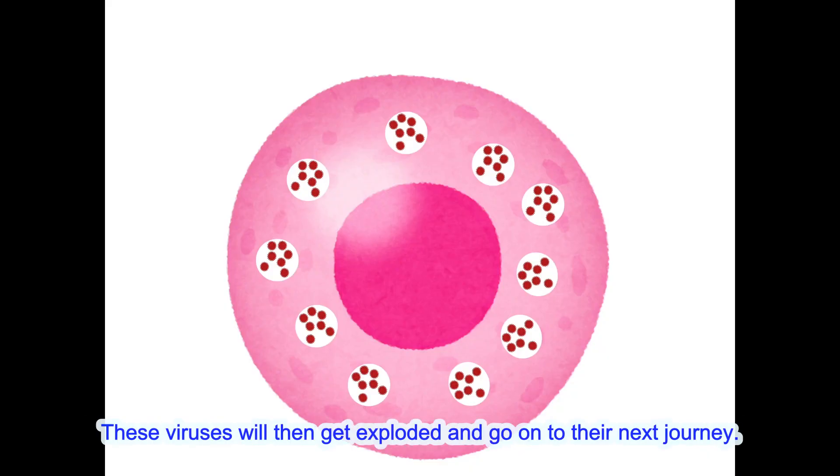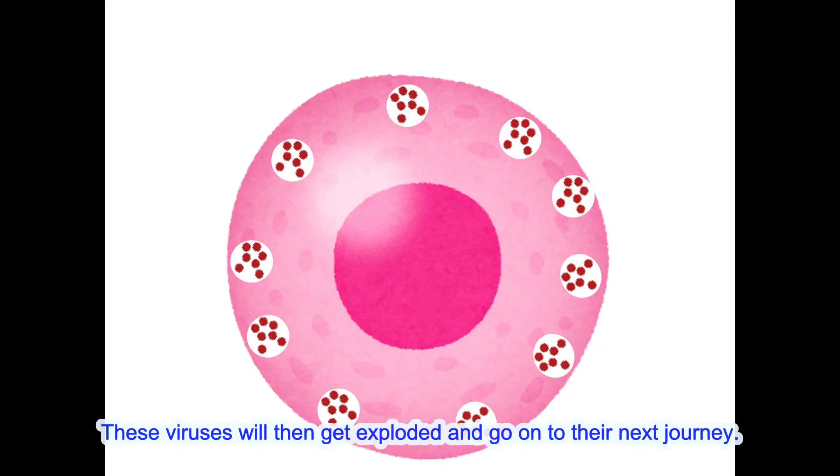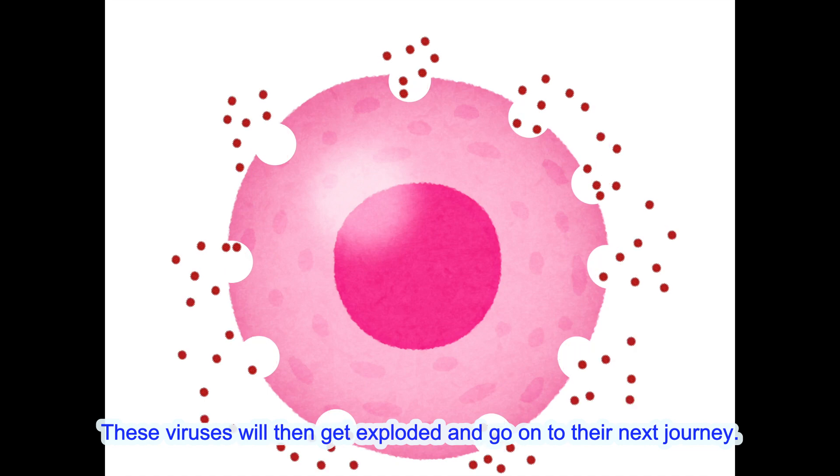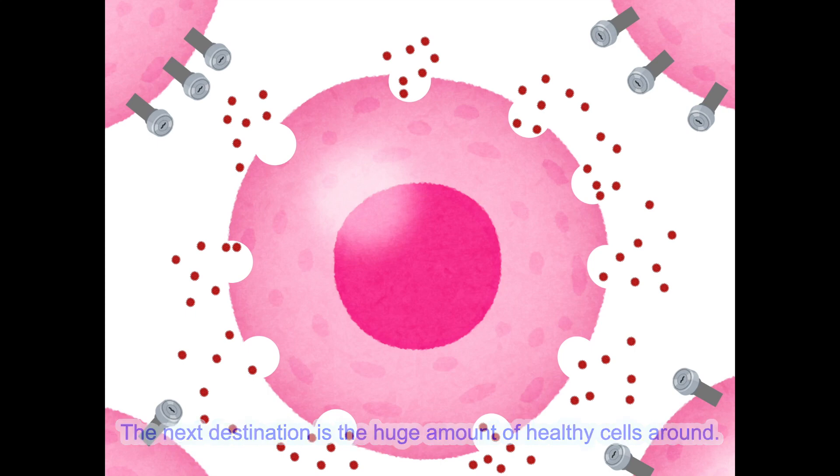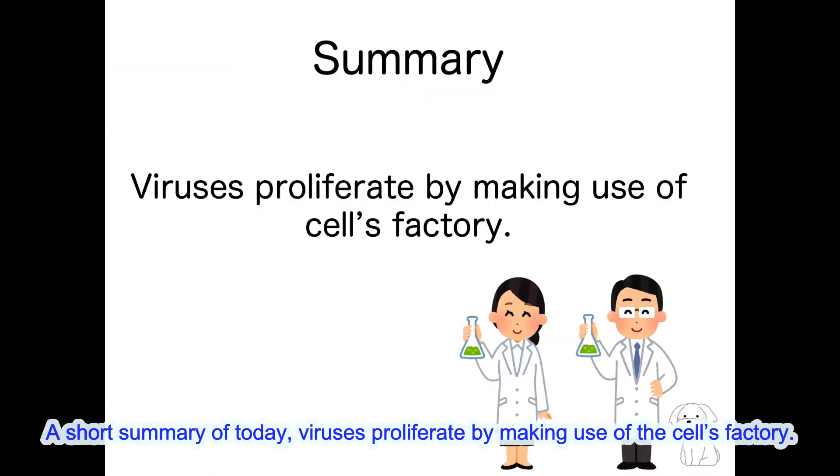These viruses will then get expelled and go on to their next journey. The next destination is the huge amount of healthy cells around. A short summary of today: viruses proliferate by making use of the cell's factory.